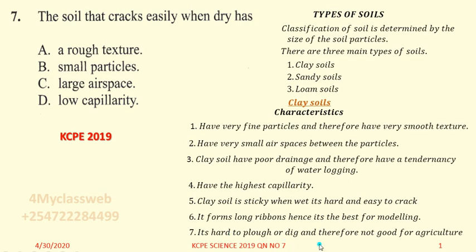Point number seven is that clay soil is hard to plow or dig and therefore is not good for agriculture. Due to characteristics like water logging and poor air spaces, this soil becomes very hard and once you try to dig it, it becomes very very difficult.